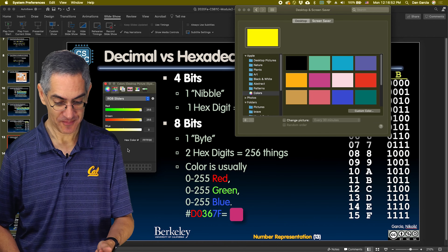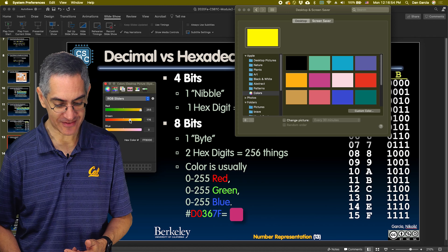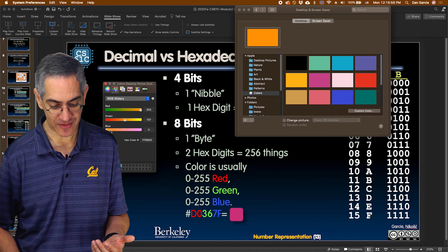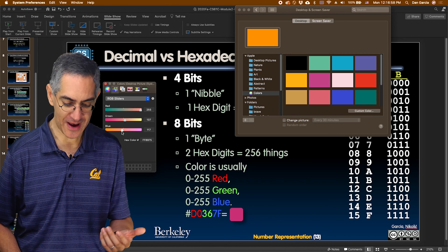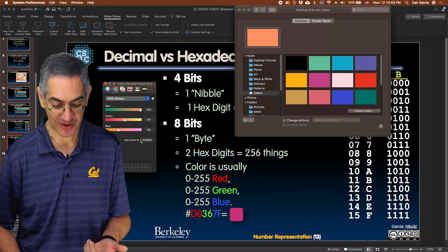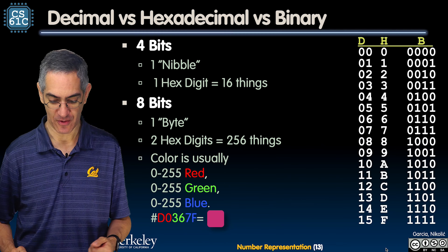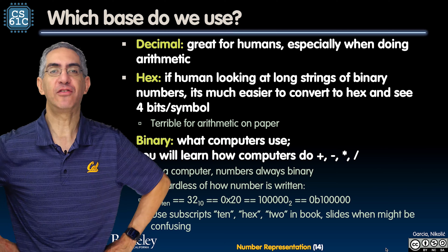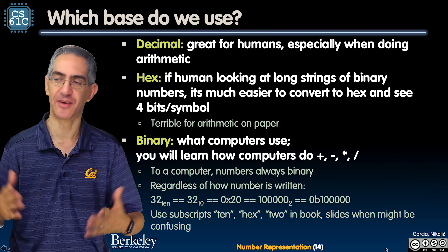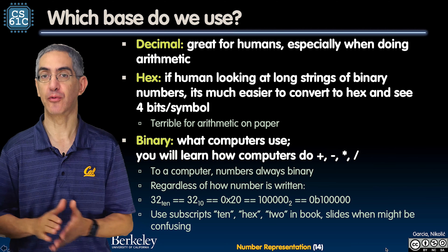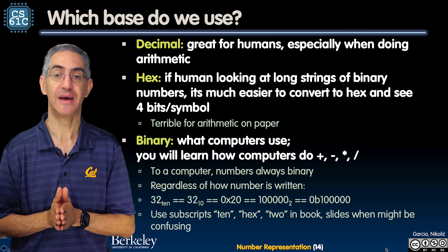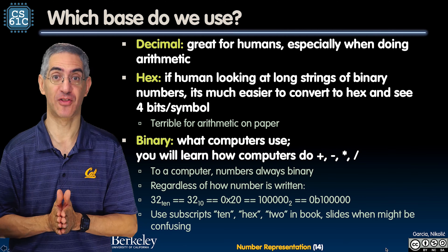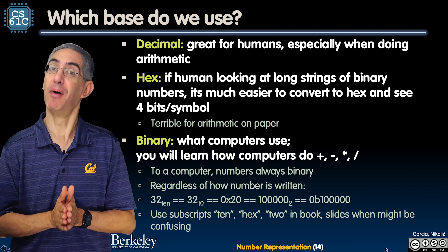4 bits is called a nibble; 8 bits is called a byte — get it, a byte and a nibble. The instructor has also tried advocating that 2 bits should be called a 'taste,' but nobody's ever bought into that.